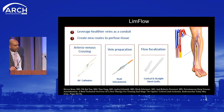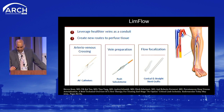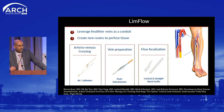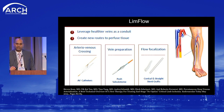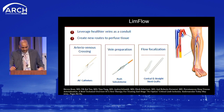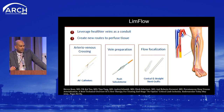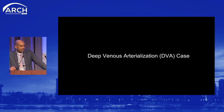Many of us have been doing DVA off the shelf for years. In 2013, the LimFlow device came online with initial safety and feasibility data. It has dedicated catheters for arterial and venous access to create the artery-to-vein connection, a dedicated valvulotome to destroy and disrupt venous valves in the outflow vein, and conical stent grafts to optimize the attachment points between the artery and vein.